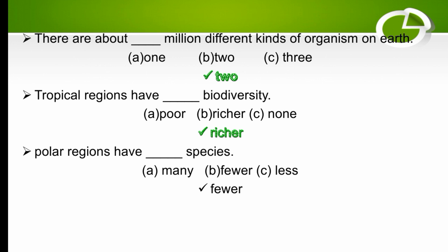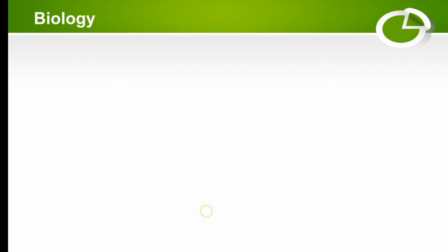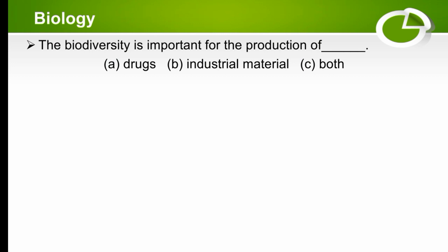Biodiversity is responsible for variety of food — the right option is variety of food. The next MCQ: biodiversity is important for the production of both drugs and industrial materials, so the right option is both.